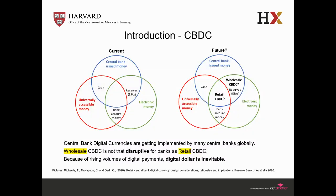What niche can CBDC occupy in the future? From an implementation design perspective, there are two types of CBDC: wholesale and retail. Wholesale CBDC means interbank — it's available for commercial banks and some financial institutions, but not to the general public. In the case of retail CBDC, the central bank issues money available for the general public, and retail CBDC excludes intermediaries.